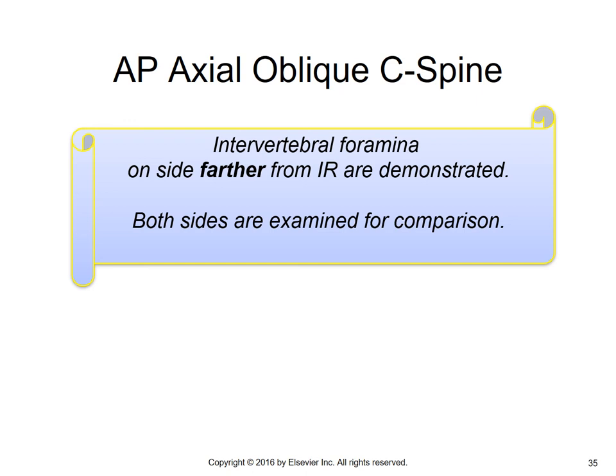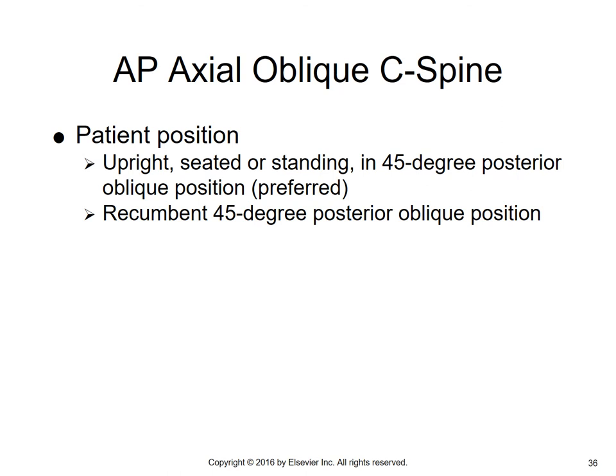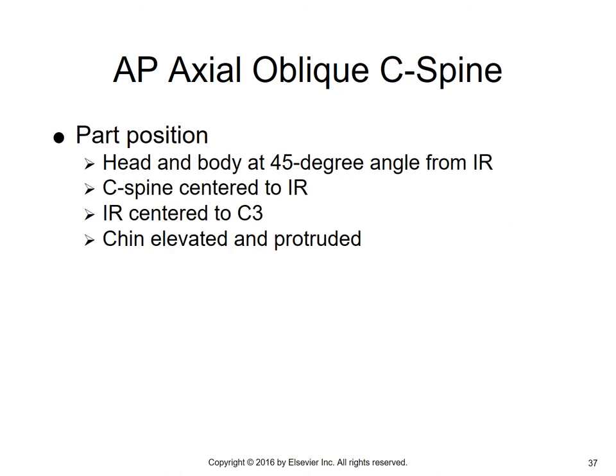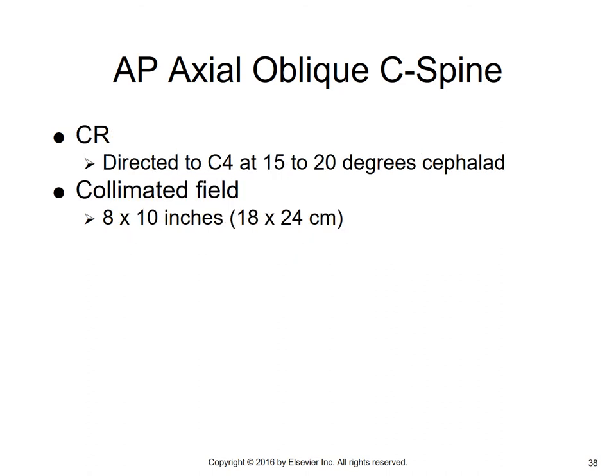Both sides are done for comparison. Patient positioning is upright, seated, or standing at a 45-degree posterior oblique position. You can also do these recumbent. Part positioning: head and body are at a 45-degree angle from the IR. C-spine is centered to the IR, which is centered to C3. The chin is elevated and protruded. Central ray is directed at C4, the thyroid cartilage, at 15 to 20 degrees cephalad. Use a collimated field of 8 by 10 inches.